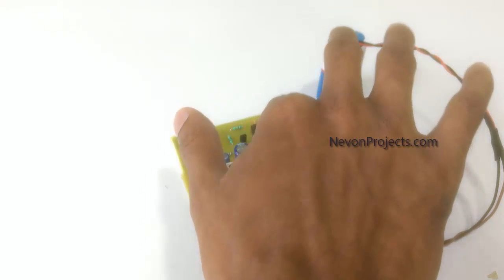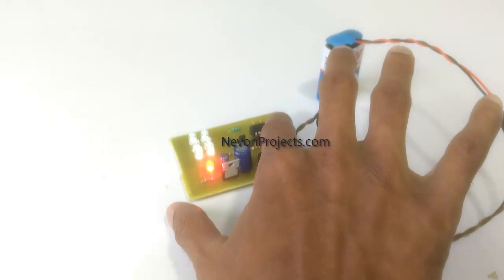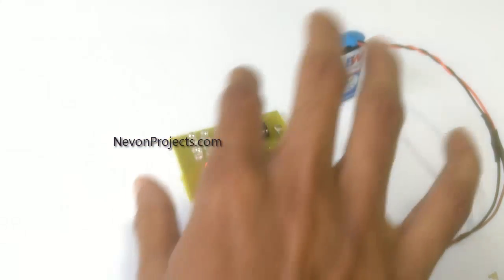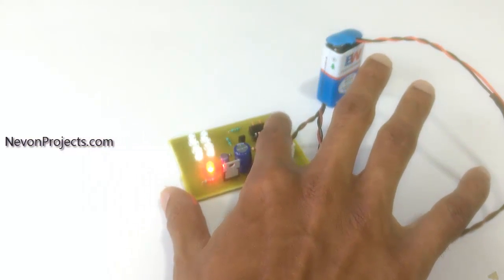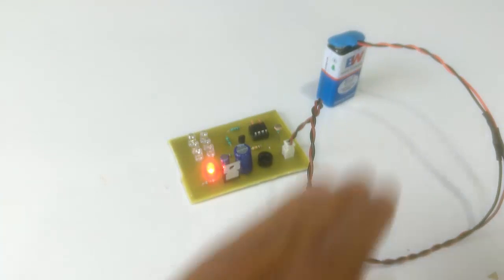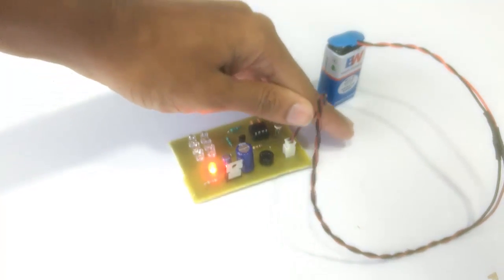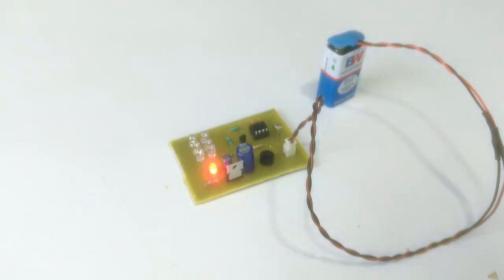We just have to cover the LDR to demonstrate a power failure. As you can see, when we block it, the LEDs start glowing. This is how the system works. Thank you.